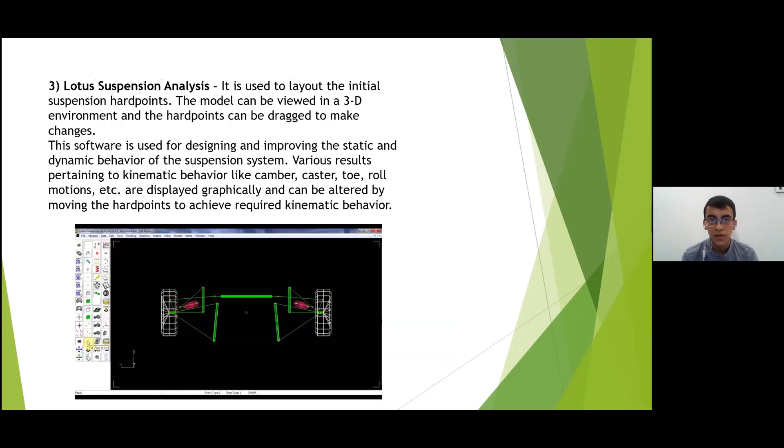The last type of analysis is Lotus Suspension Analysis. It is used to lay out the initial suspension hard points and we can view it in a 3D environment and drag the hard points as required. This software is used for designing and improving the static and dynamic behavior of the system. Various results pertaining to the kinematic behavior like the suspension geometries like caster, camber, toe, the roll motions of the car are displayed graphically in the software and by moving the hard points on the screen we can see these values changing and we can optimize the suspension system.